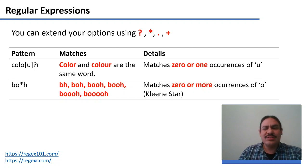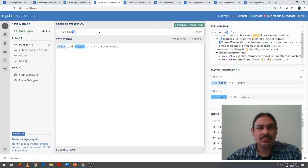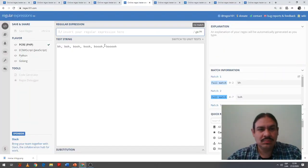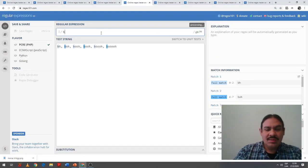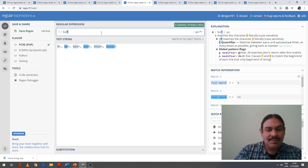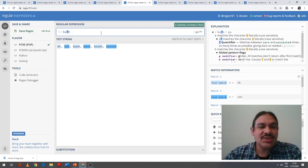This is useful if you're looking for data on Twitter, for example, where someone might write what with one A, what with three A's, or what with 10 A's. They're all the same word. So B-O star H will match all of these. B zero O-H, as in B-H, and then bo, boo, and so forth.